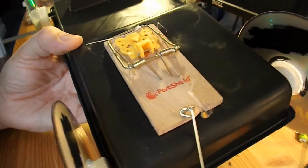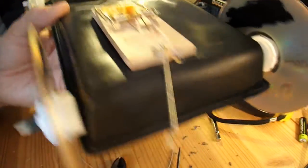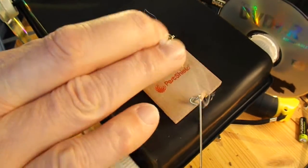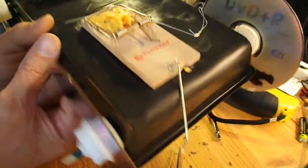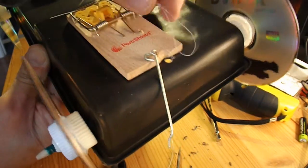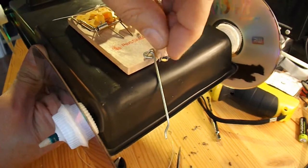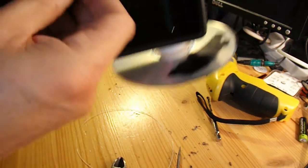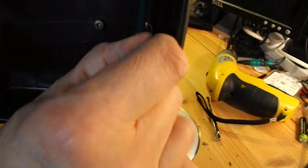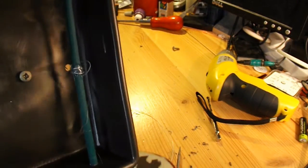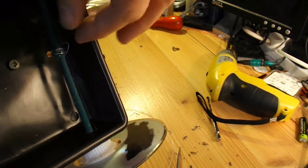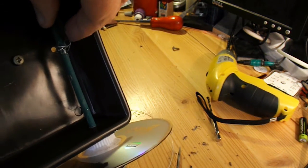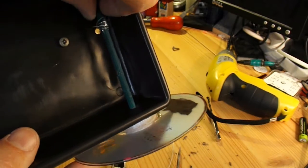There we are. Mousetrap in place. Bit of fishing line. That goes down through the hole. Then underneath. We hook it onto the axle. And wind it up.